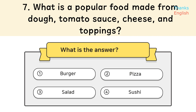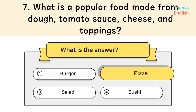Question 7: What is a popular food made from dough, tomato sauce, cheese, and toppings? Answer 2: Pizza.